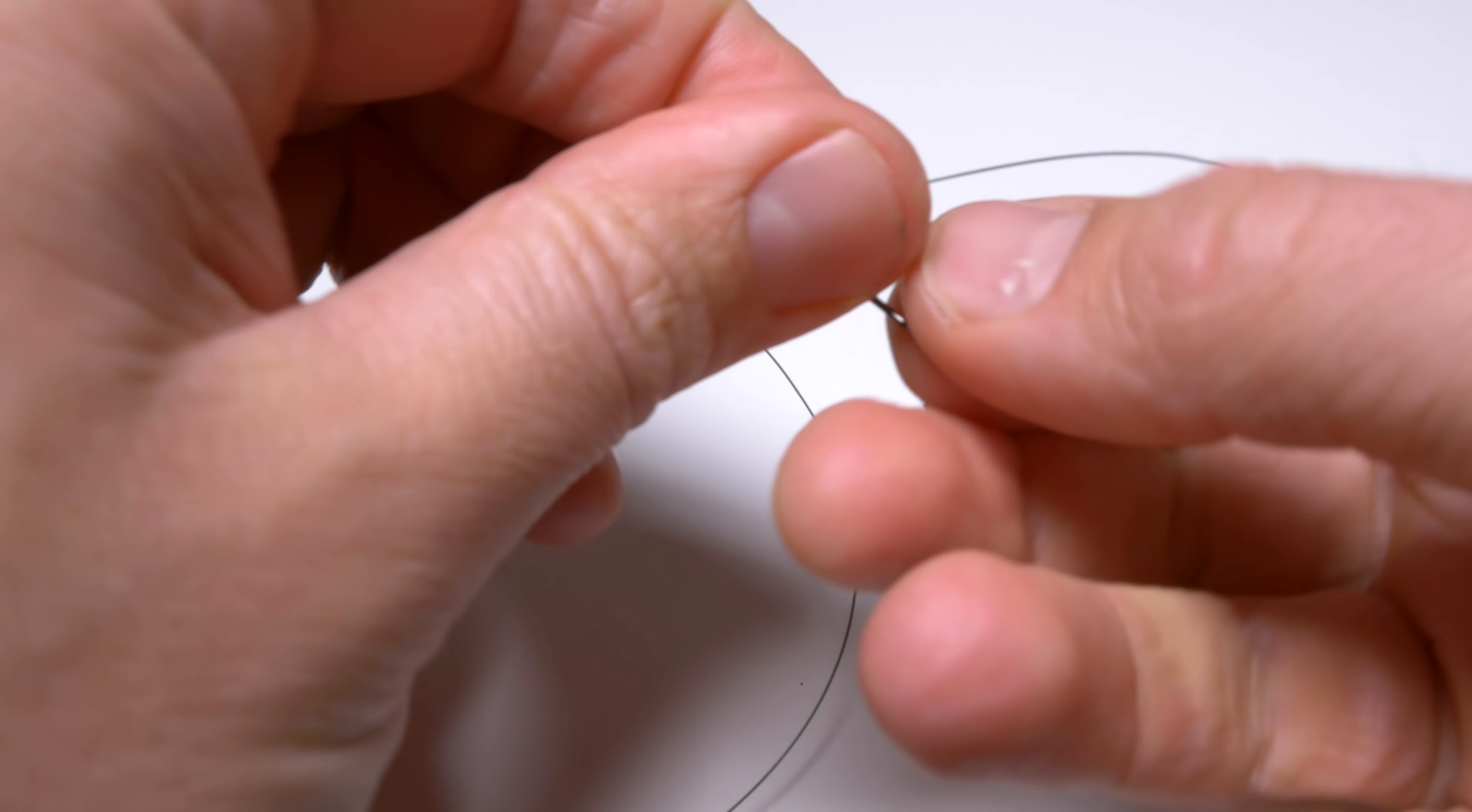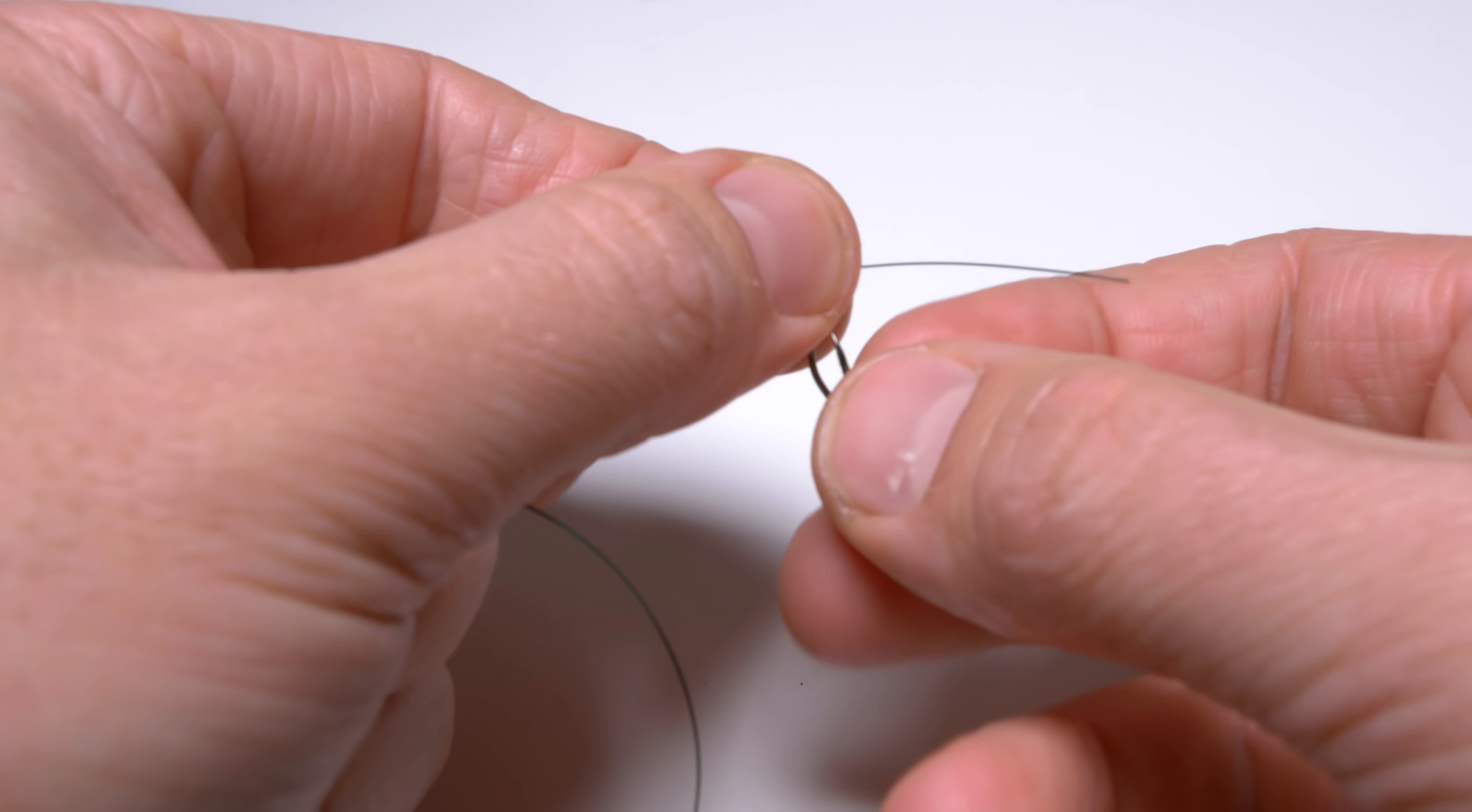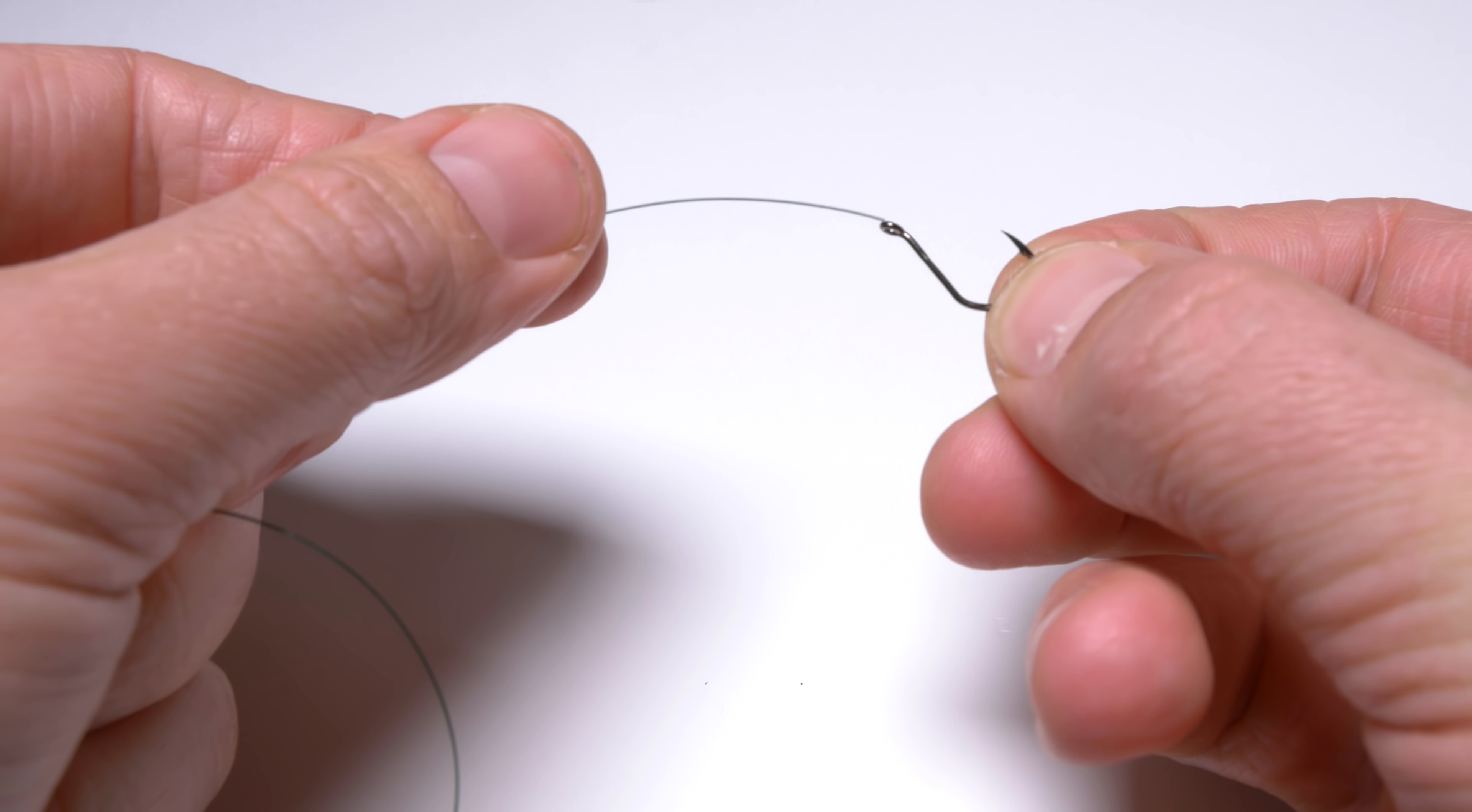Then we want to grab our hook and thread it onto the line starting from the opposite side than the hook's point.